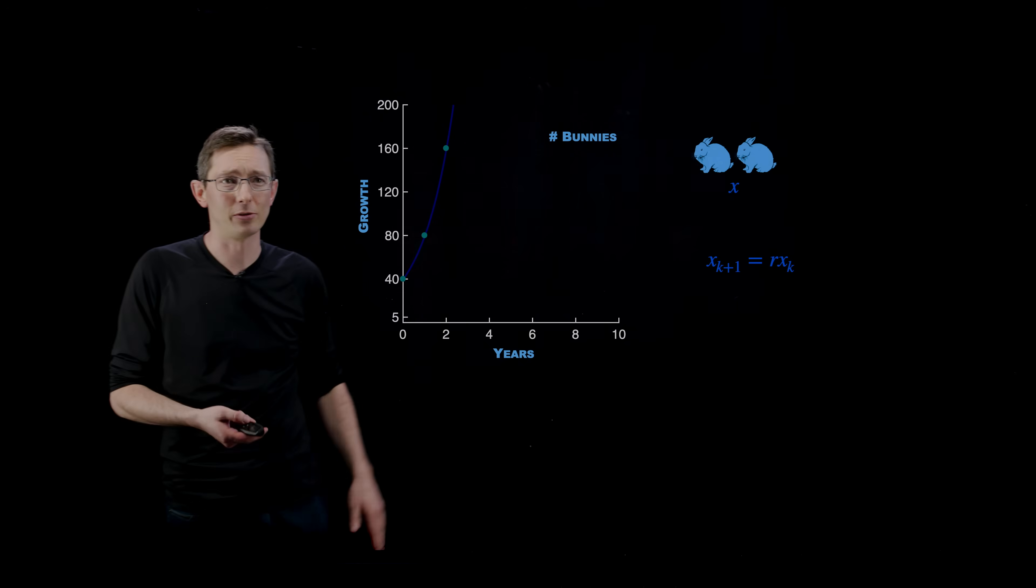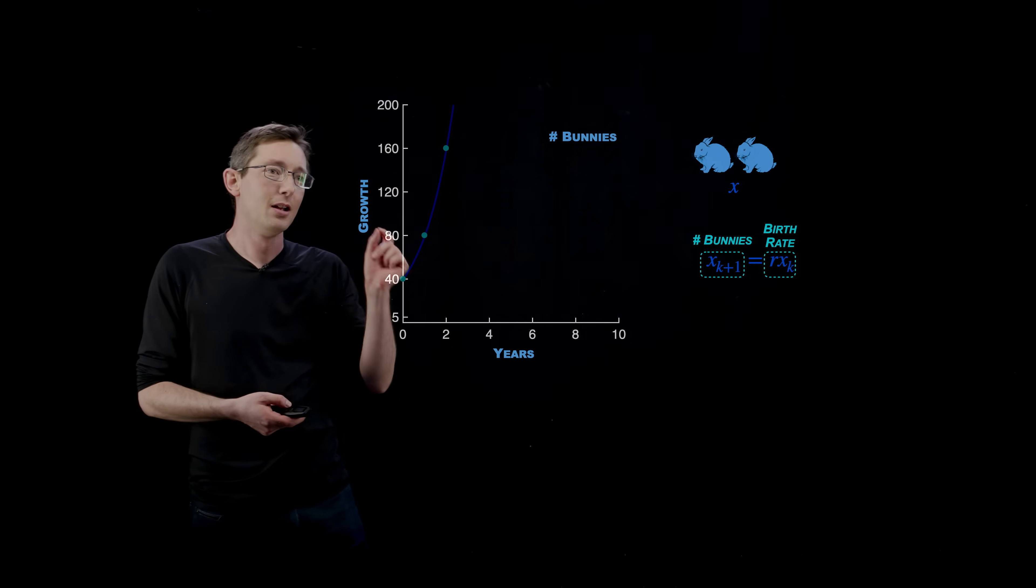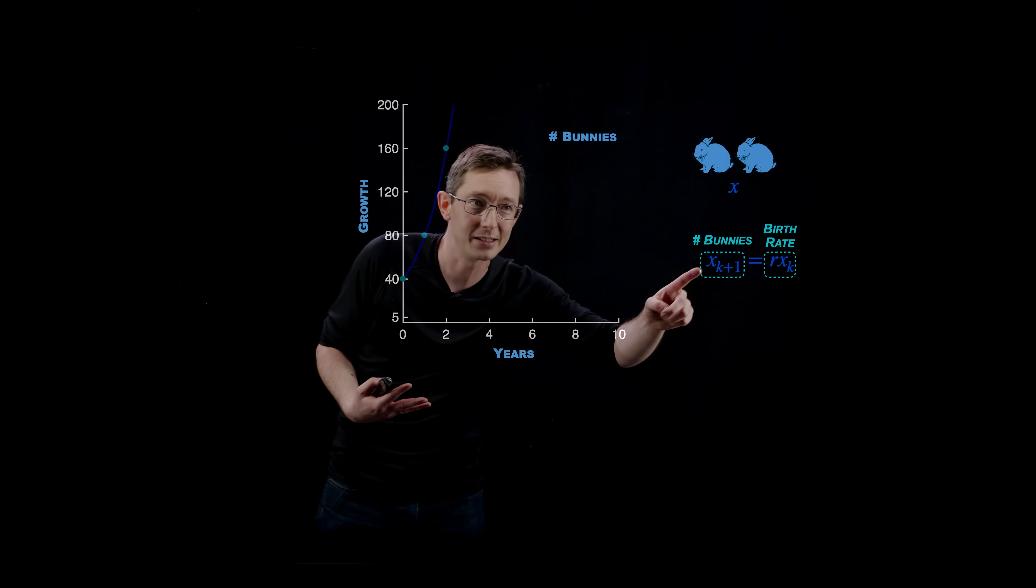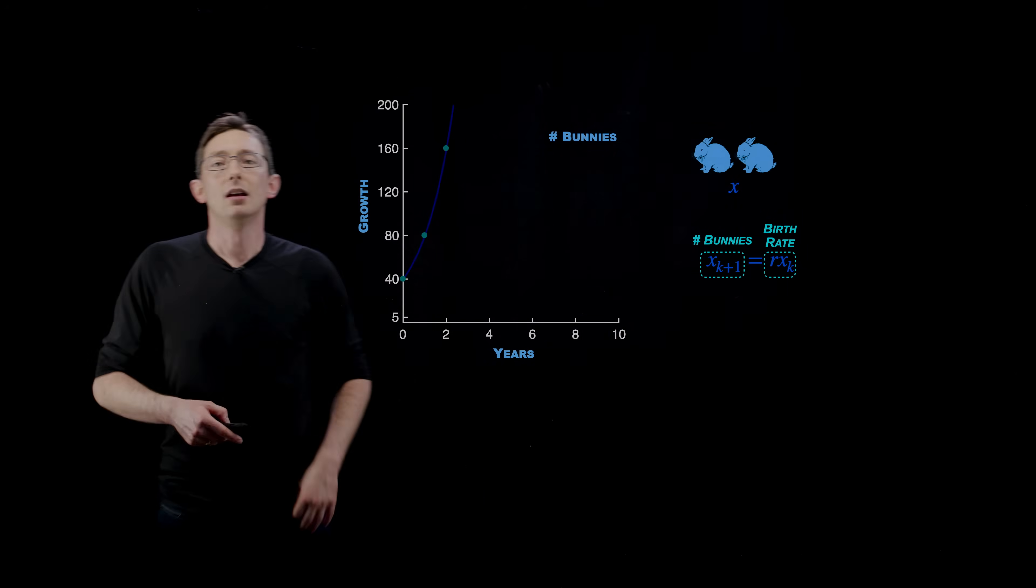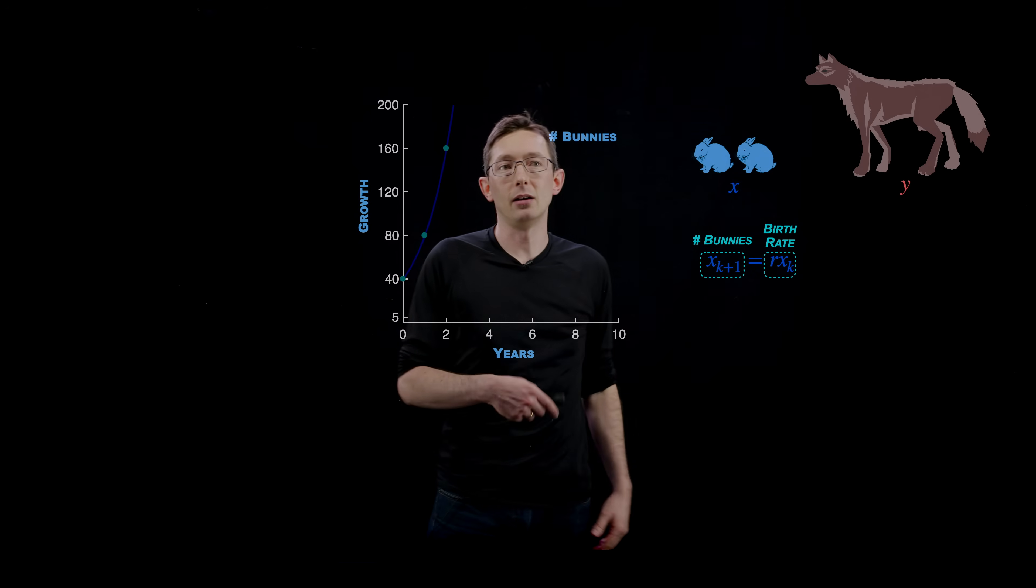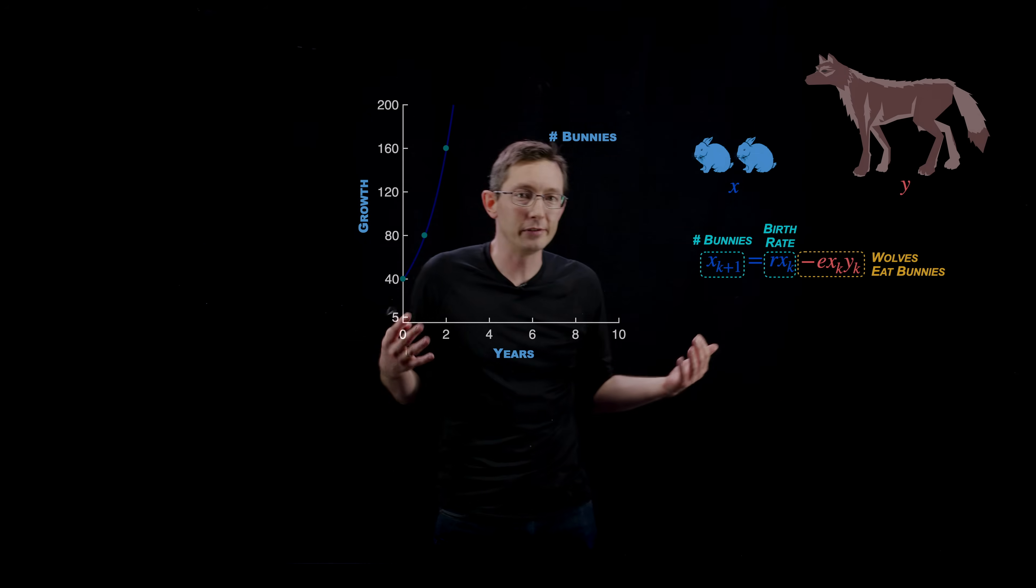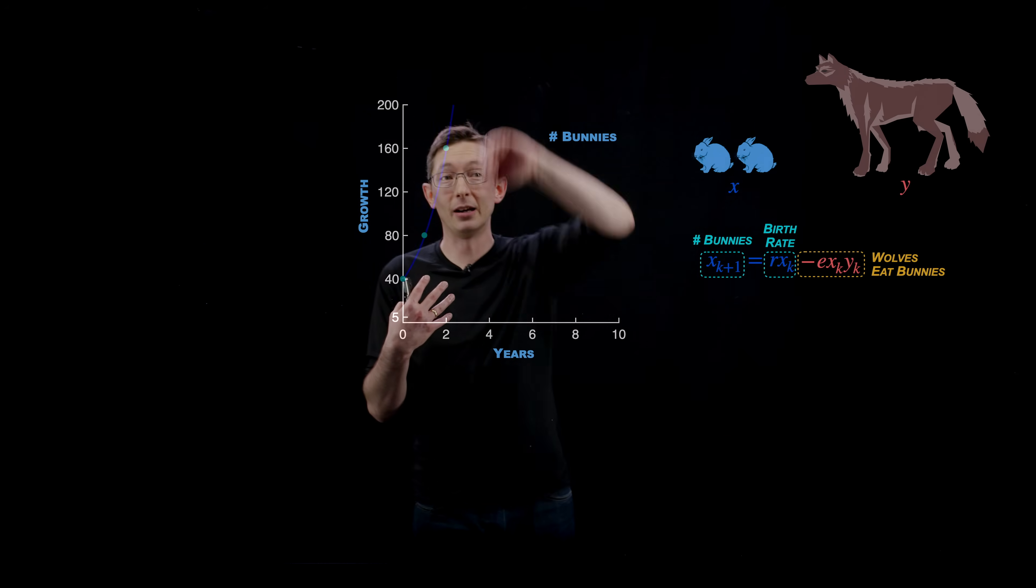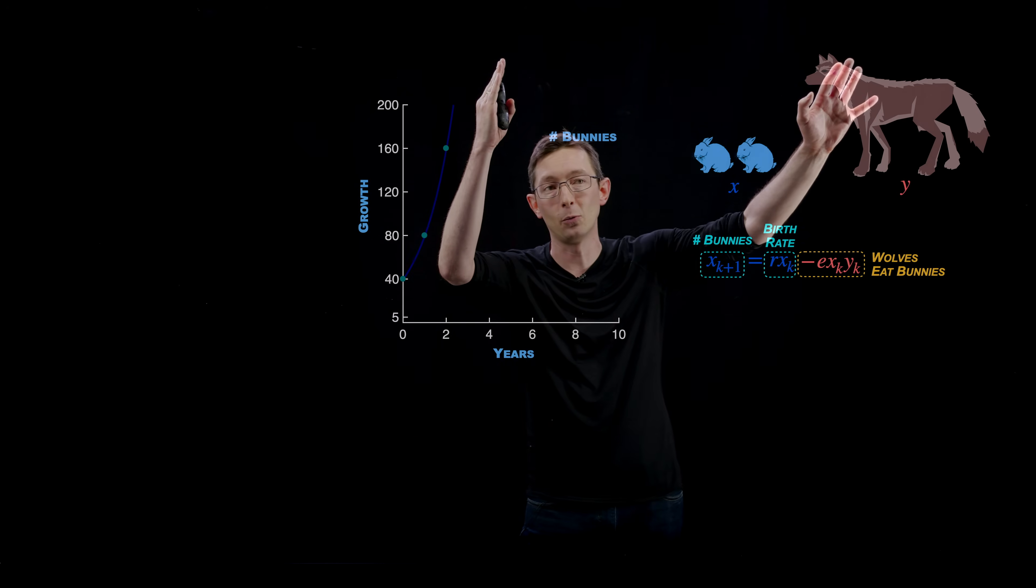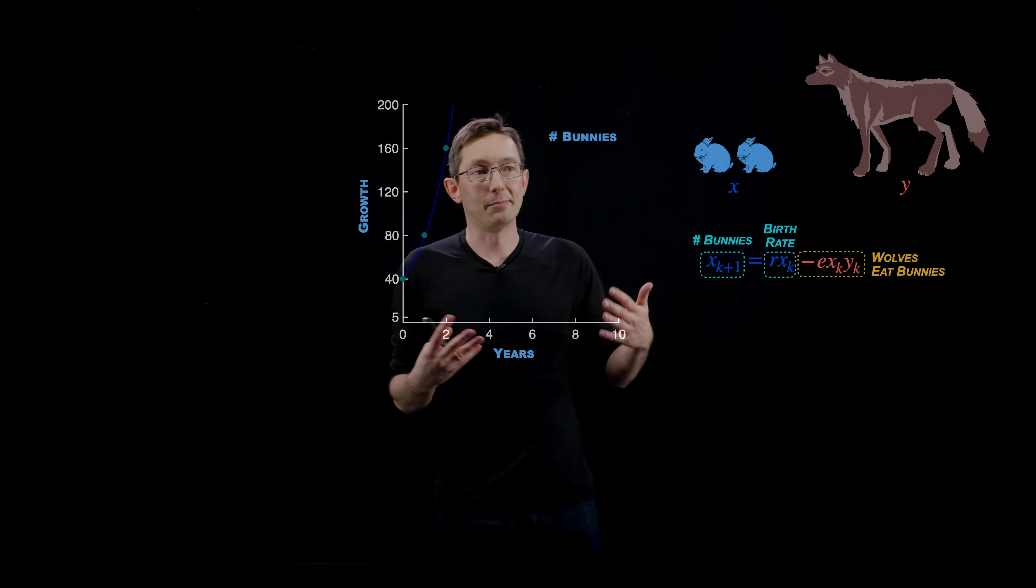Now another way that exponential growth can curtail: I have the same bunnies given by X. X is my population of bunnies, X_k+1 is my number of bunnies next year, R is my birth rate. What if I have wolves? What if there's some predator species? My wolves are Y. The population of wolves is given by Y. We know that wolves eat bunnies and that's going to keep these bunnies from growing exponentially because if I get more and more bunnies I'm going to get more and more wolves that eat those bunnies. Eventually I'm going to hit some kind of a balance point.